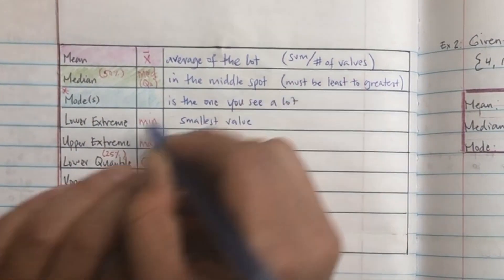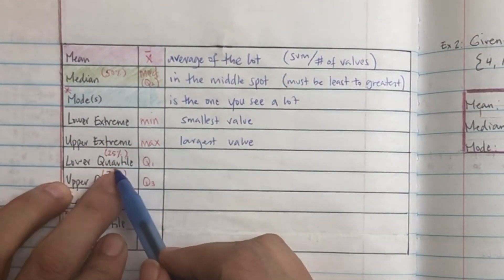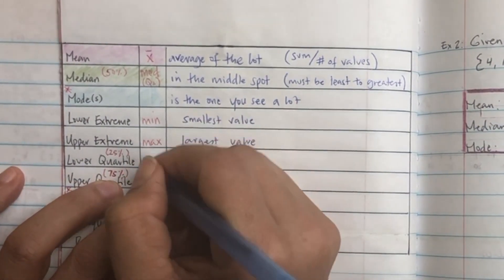Okay, so then the next one is the lower extreme. What does that sound like? Small. So smallest value is the minimum. The next one is upper extreme. What does that sound like? Largest value. That's the maximum.